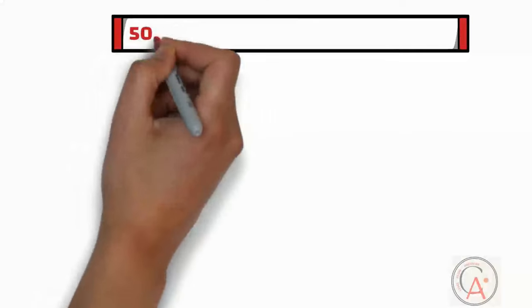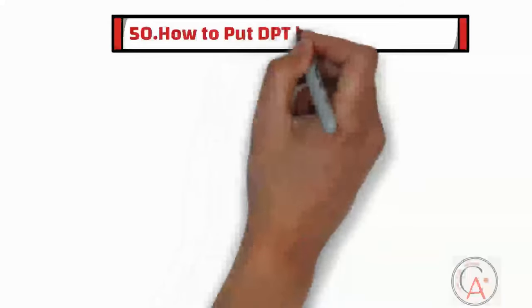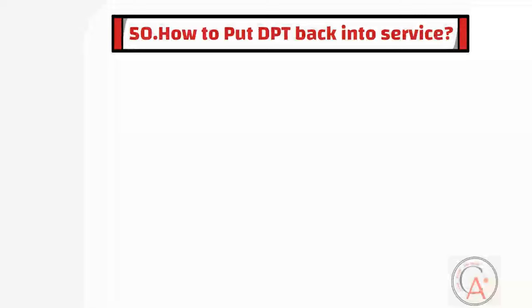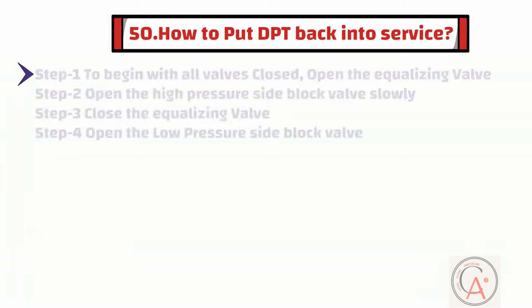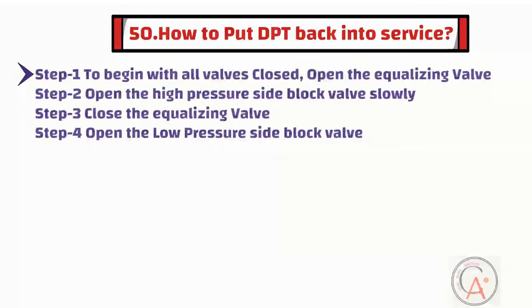Question fifty is: how to put DPT back into service? To put DPT back into service, begin with all valves closed, then open the equalizing valve. Then open the high-pressure side block valve slowly. Then close the equalizing valve. At the end, open the low-pressure side block valve.